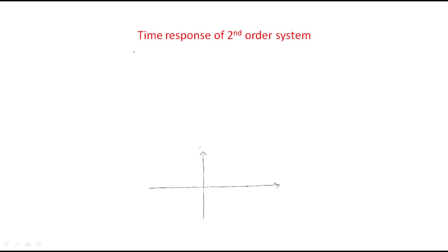Hello everyone. In this session we will continue the time response of second order systems. In the last session we found out the closed loop transfer function of the second order system, which is omega n squared divided by s squared plus 2 zeta omega n s plus omega n squared. This is the closed loop transfer function, and by doing the calculation we design a second order system.